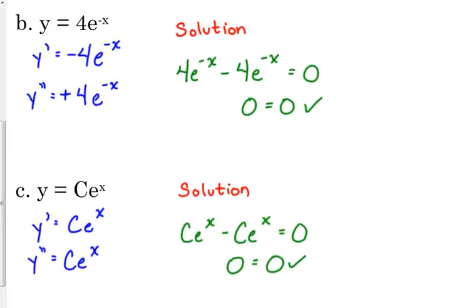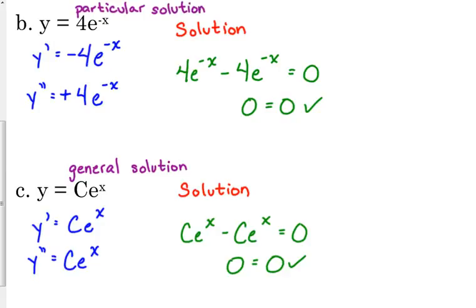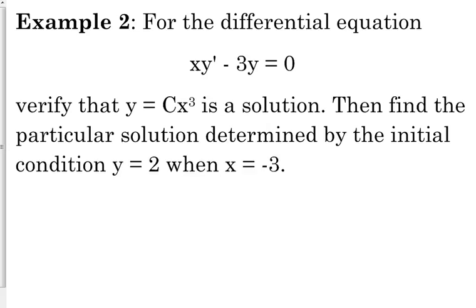So when we're talking about differential equations, example C is an example of a general solution because it has a C in it. Example B is a particular solution because it doesn't have the C — it's got the specifics already plugged in; it knows what that constant in front is. Speaking of general and particular solutions, let's look at a more involved differential equation: x times y prime minus 3y equals 0.